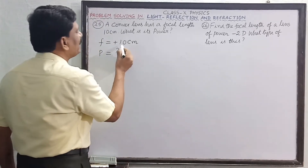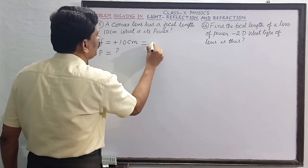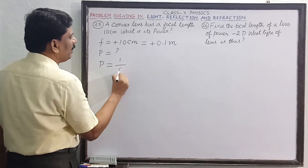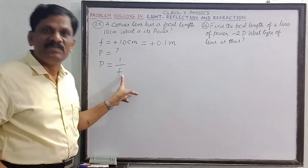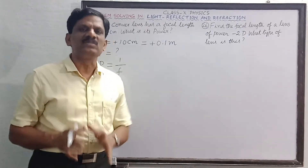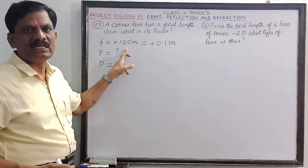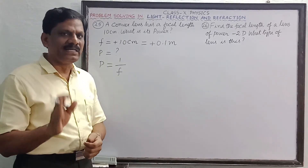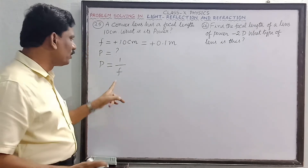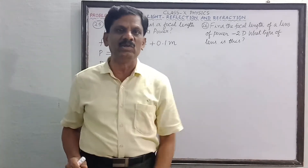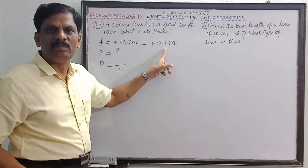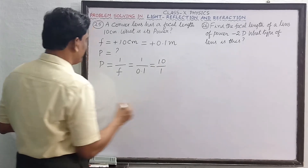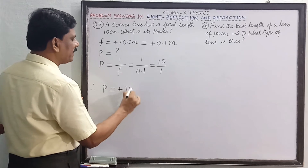Focal length f equals plus 10 centimeter, which equals 10 divided by 100, that is plus 0.1 meter. Power equals the reciprocal of focal length, and focal length must be in meters. So power equals 1 divided by 0.1, which equals 10 divided by 1. Therefore power equals plus 10 diopter.